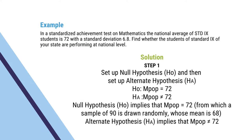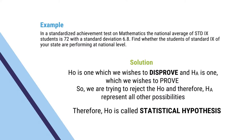First step: let us set up the null hypothesis and then the alternate hypothesis. Null hypothesis states that the mean of the population is equal to 72 — that is, there is no significant difference between the population mean and the sample mean. Null hypothesis implies that mean of the population is equal to 72, from which a sample of 90 is drawn randomly, whose mean is 68. Alternate hypothesis states that the mean of the population is not equal to 72. Null hypothesis is one which we want to disprove; alternate hypothesis is one which we want to prove.